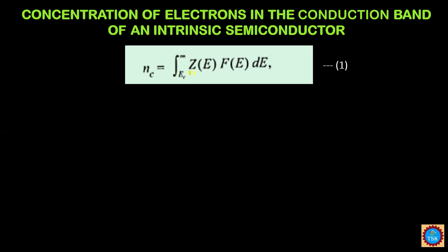The integrand contains Z(E) and F(E), where Z(E) represents the density of energy levels and F(E) is the probability of an electron occupying those energy levels, integrated with respect to dE. This is equation number 1.